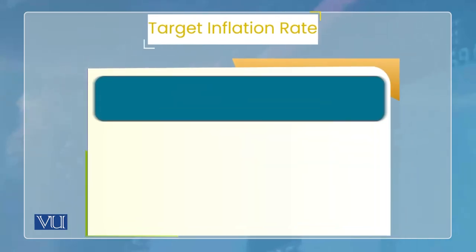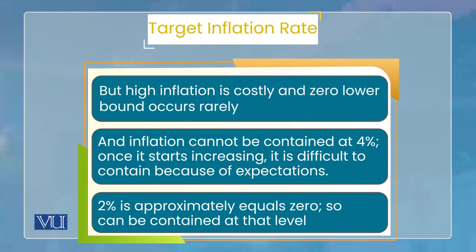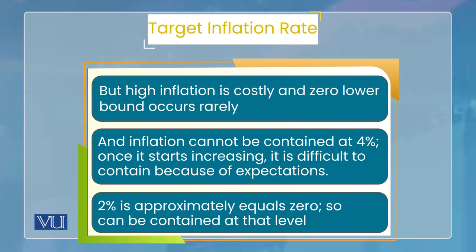अब ये जो target inflation rate है, क्या वाकई 4% तक ले जाना चाहिए? Zero lower bound वाले case के मुताबिक तो ये suggestion ठीक लगती है, लेकिन हमें इसको evaluate करना है. क्या target inflation rate जो countries 2% करते हैं उन्हें 4% कर लेना चाहिए? एक point ये आएगा कि zero lower bound या financial crisis routine matter नहीं है — ये extreme situations में होता है. तो सिर्फ extreme situation के problem के solution के लिए पूरी ज़िन्दगी का inflation target बढ़ा देना चाहिए? क्योंकि normal routine daily life के matters में higher inflation rate नुकसान देता है.